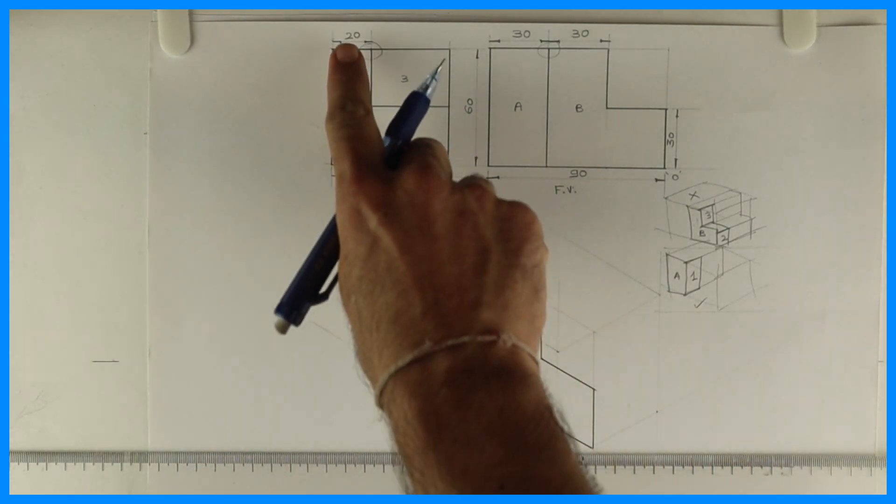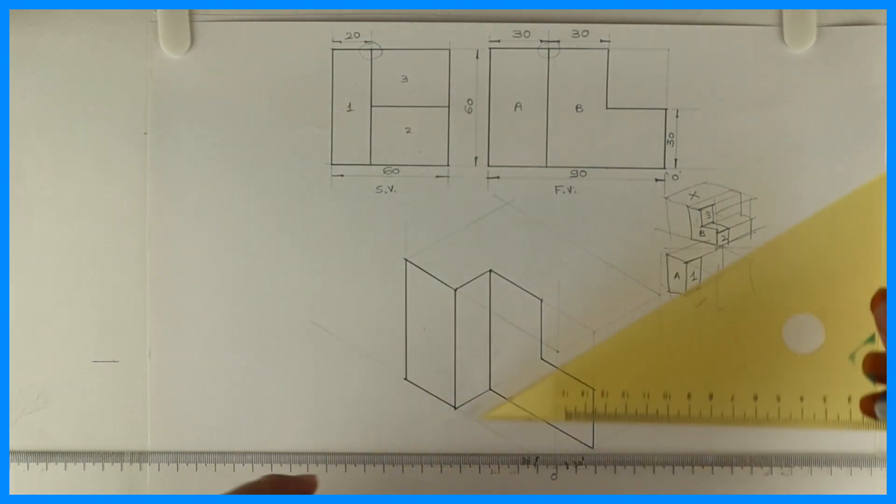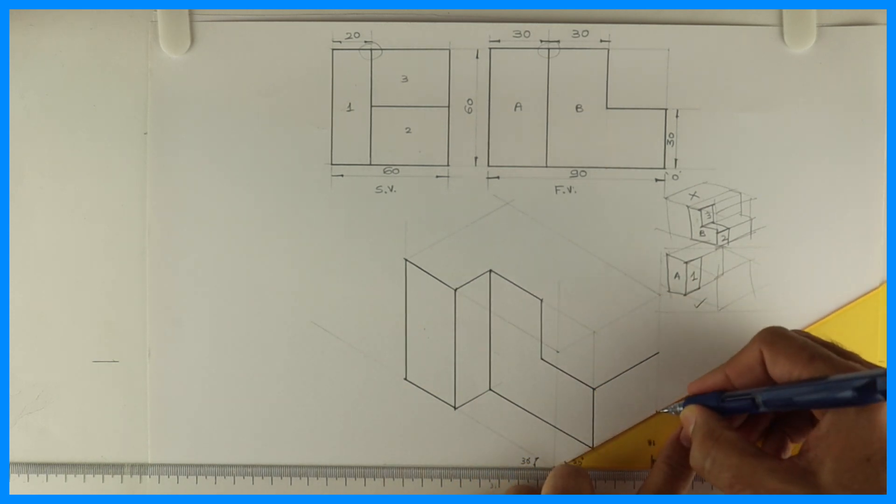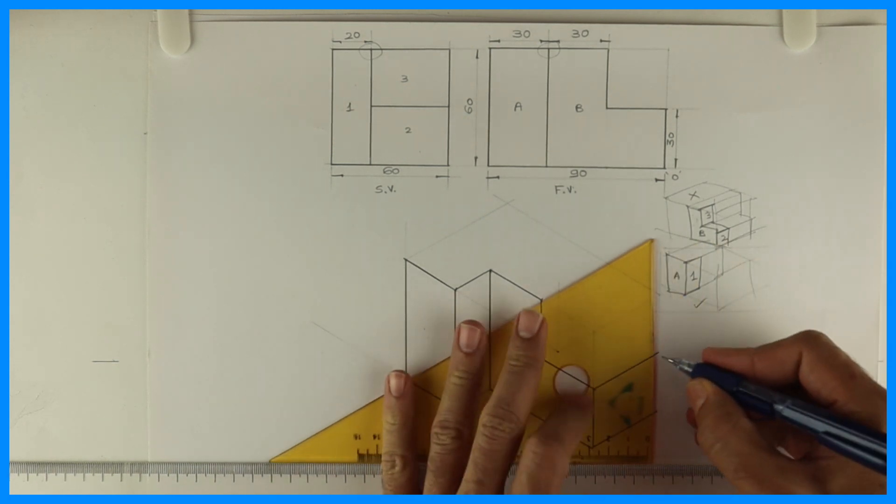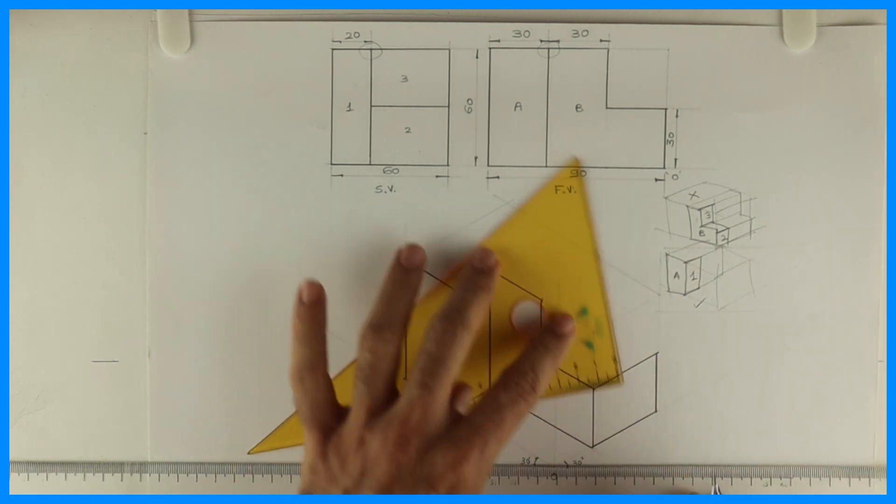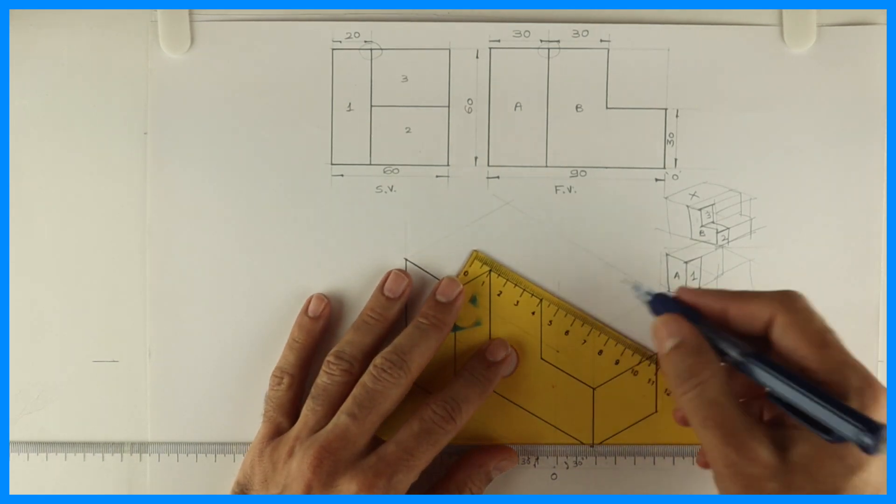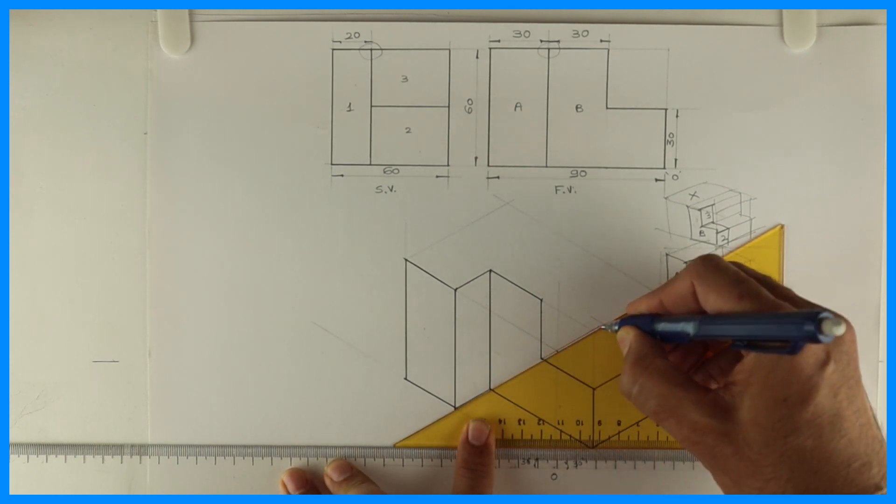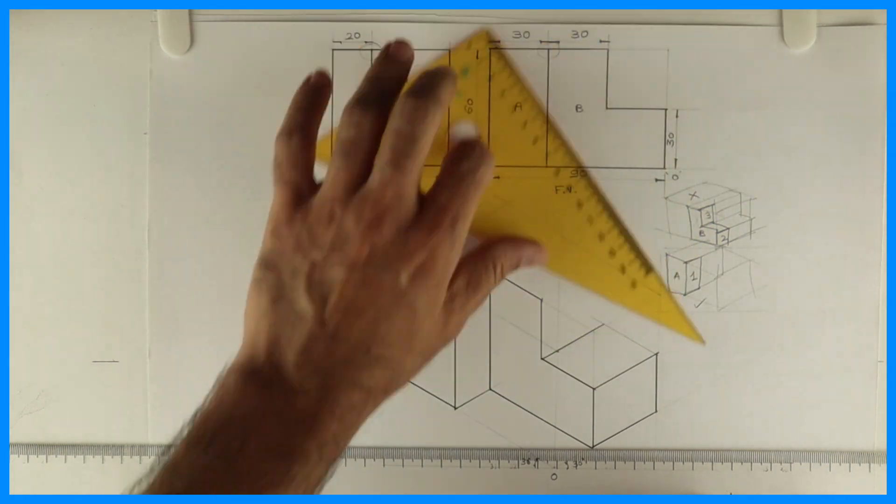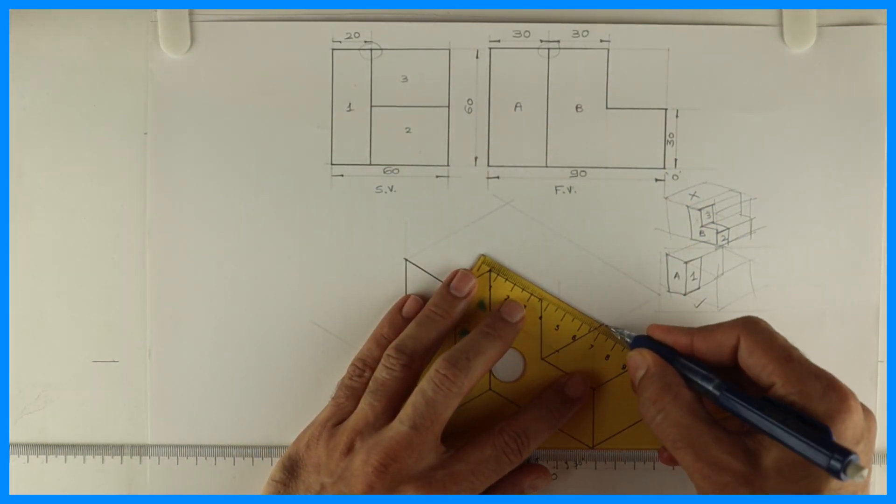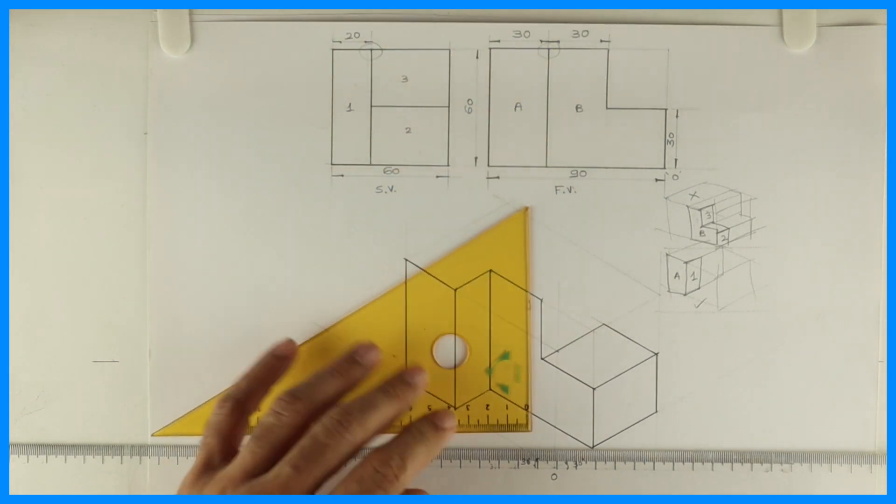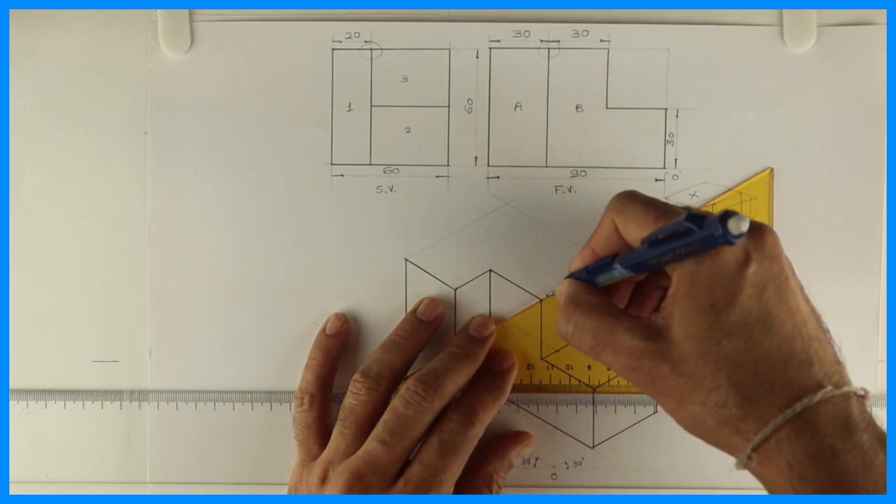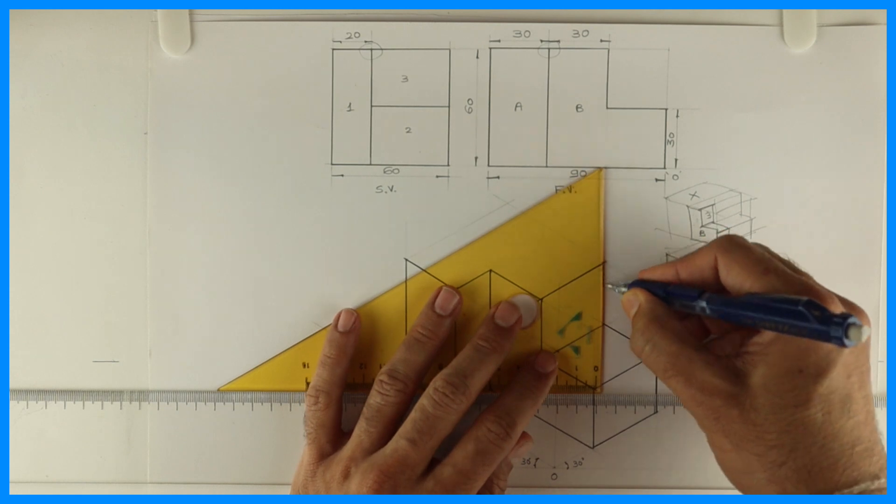Now, whatever is there in the front, the same thing is behind, right? How much you have to go behind? 40. So you take all these points behind by 40. See this. So we got part 3 and 2 also.